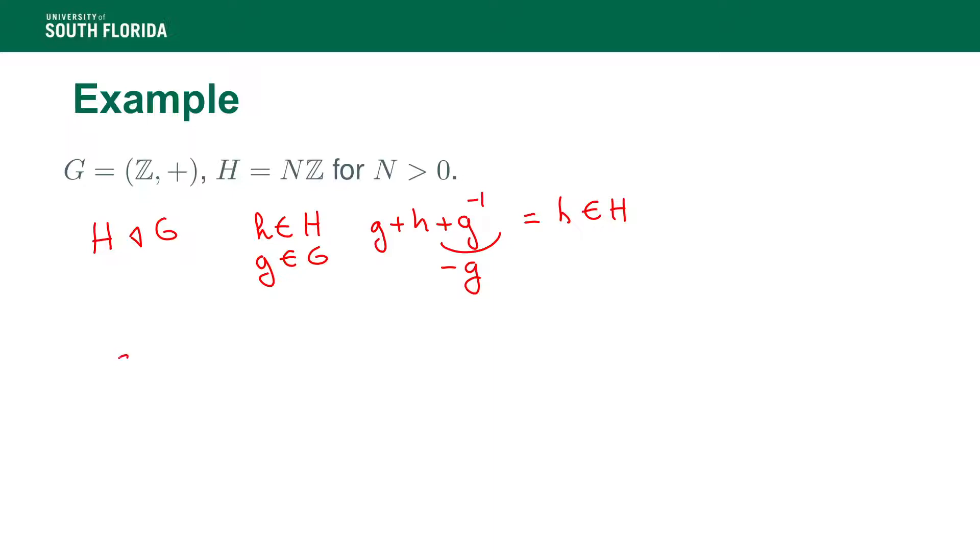Now, if I look at an element of G quotient by H, I'm looking at a congruence class modulo N. So if I have A plus B, I'm doing A plus NZ plus B plus NZ. And by definition, this is going to be A plus B plus NZ. And this is well defined, and this is how we define the addition between congruence classes.